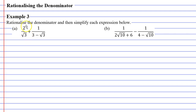Looking at the first fraction, it has a denominator which is the square root of three. The best way to rationalize this denominator is to multiply it by itself, so we're going to multiply by the square root of three, remembering that we must multiply the numerator by the same thing. Root three times two gives us two root three, and root three times root three gives us the whole number three.